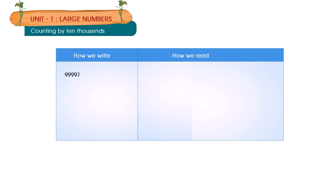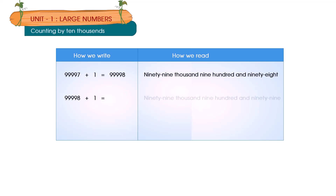99,997 plus 1 is equal to 99,998. 99,998 plus 1 is equal to 99,999. 99,999 plus 1 is equal to 1,00,000.